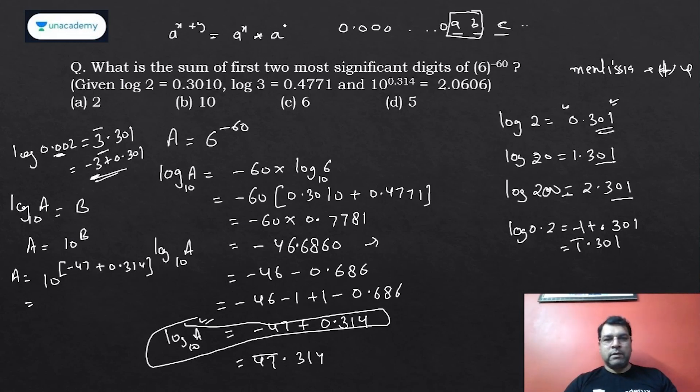Now you can think that this value is given to you, so it's actually 2.0606 × 10^(-47). What does it mean? This simply gives you the place of decimal.